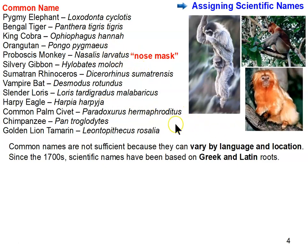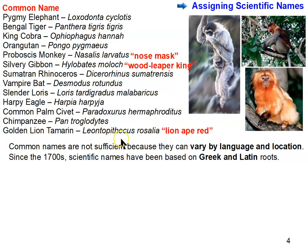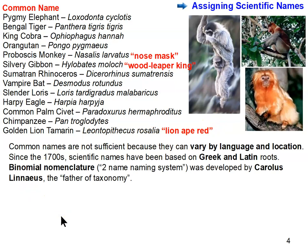Another example: Hylobates moloch is the silvery gibbon — 'hylobates' means wood leaper, because it leaps from branch to branch through the woods like a king of the forest. And Leontopithecus rosalia translates as lion-ape-red — that's the golden lion tamarin. Learning Greek and Latin roots can be fun when translating these names.